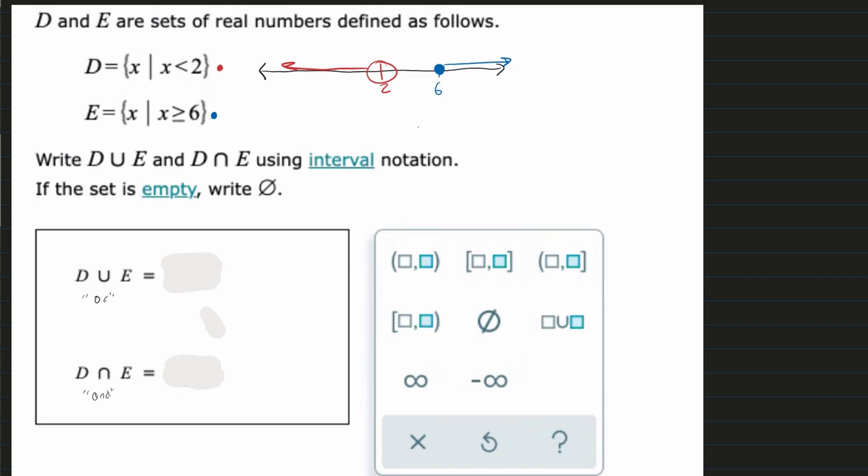So with that, we can write our ORs and ANDs here. So when we look at this, we see that we're going to have a parenthesis for this one because it's open. And then we're going to have a bracket for this because it's closed.